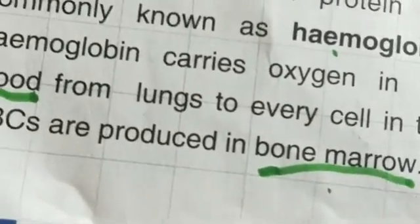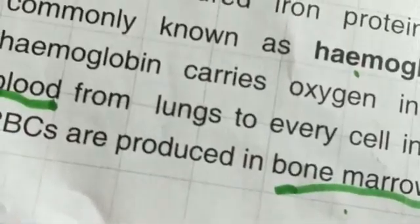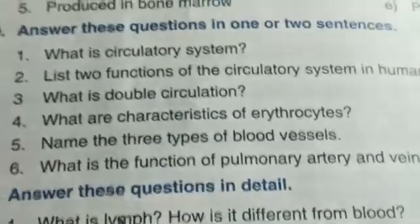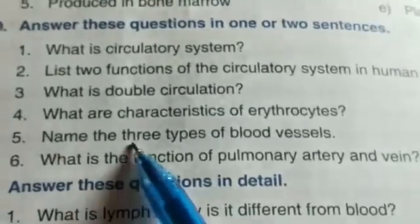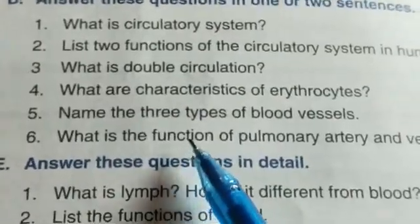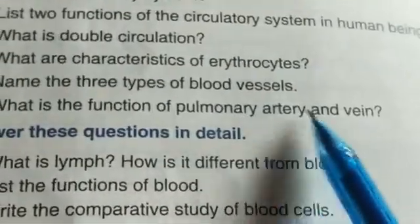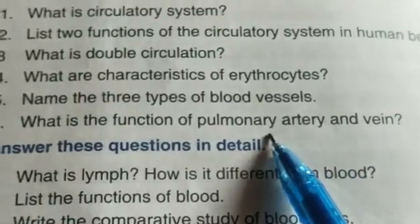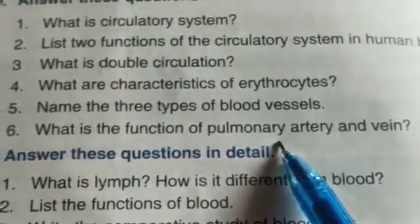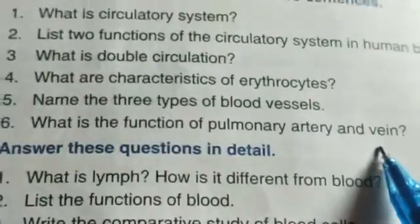You have to write characteristics like: what is the color, what is the shape of the red blood cell. Then name the three types of blood vessels — arteries, veins, and capillaries. What is the function of the pulmonary artery and pulmonary veins — pulmonary artery carries impure blood from the heart to the lungs, while pulmonary veins carry pure blood from the lungs to the heart.